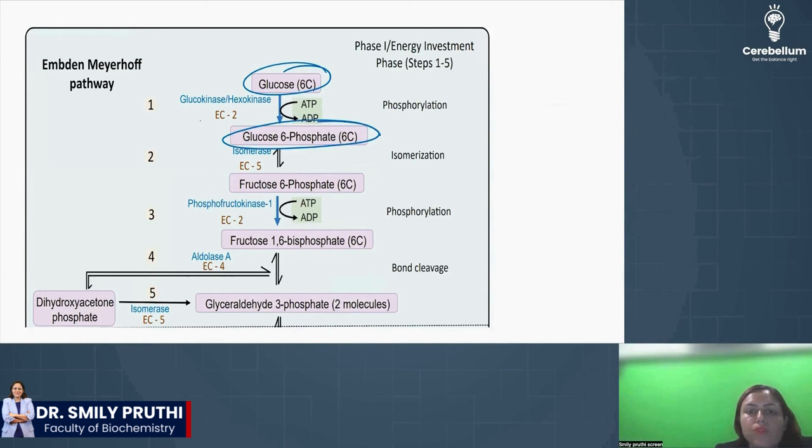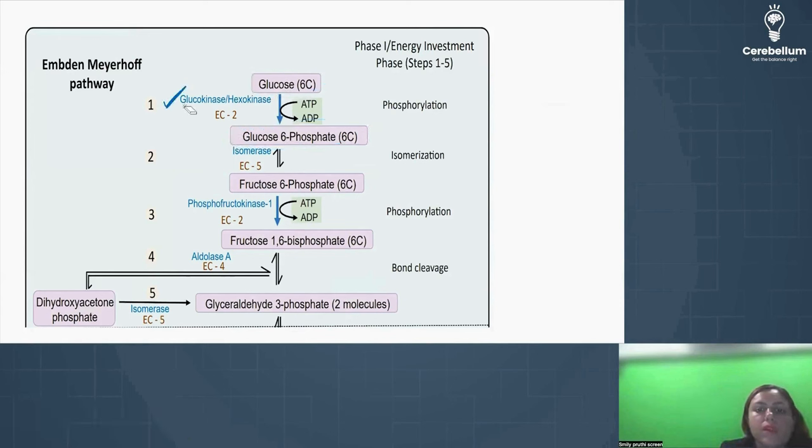Glucose to glucose 6-phosphate, enzyme is glucokinase or hexokinase. Then glucose 6-phosphate to fructose 6-phosphate by isomerase. They are isomers of each other. Fructose 6 to fructose 1,6-bisphosphate, here also kinase, phosphofructokinase 1. That is short form PFK1, which is the rate limiting enzyme.